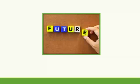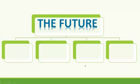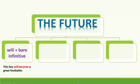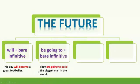Hello dear students. In this video we are going to talk about the future. There are four different ways of expressing the future in English. The first is will plus the bare infinitive — for example: 'This boy will become a great footballer.' Another structure is be going to plus bare infinitive — for example: 'They are going to build the biggest mall in the world.'